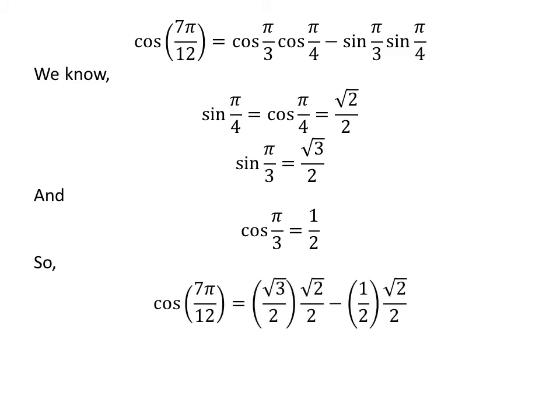Plugging the above values into the equation, cosine of 7 times pi upon 12 is equal to one half times square root of 2 upon 2 minus square root of 3 upon 2 times square root of 2 upon 2.